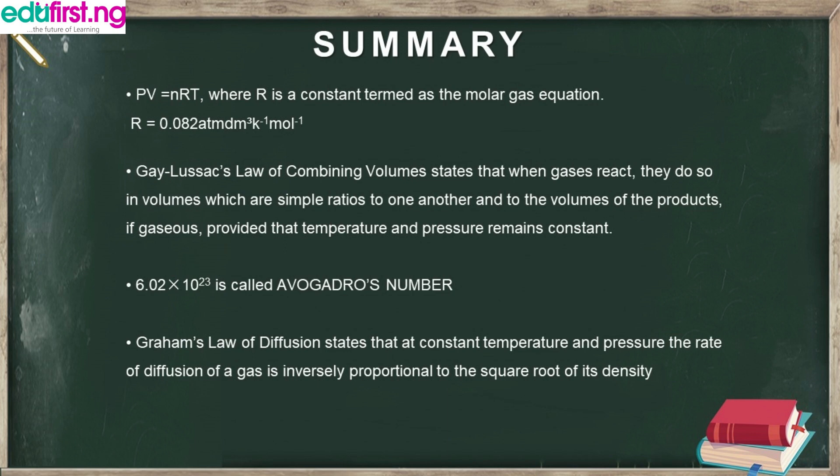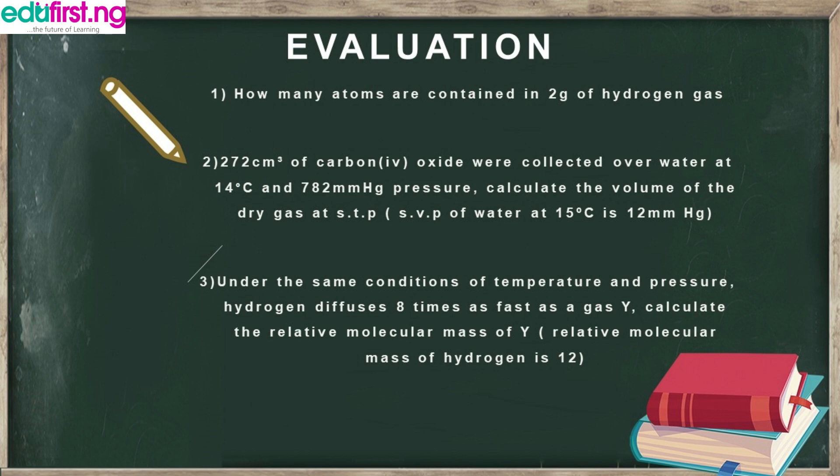To summarize: the Ideal Gas Equation is PV = nRT, where R is the molar gas constant equal to 0.082 atm·dm³·K⁻¹·mol⁻¹. Gay-Lussac's Law of Combining Volumes states that when gases react they do so in volumes in simple ratios, provided temperature and pressure remain constant. Avogadro's number is 6.02 × 10²³.